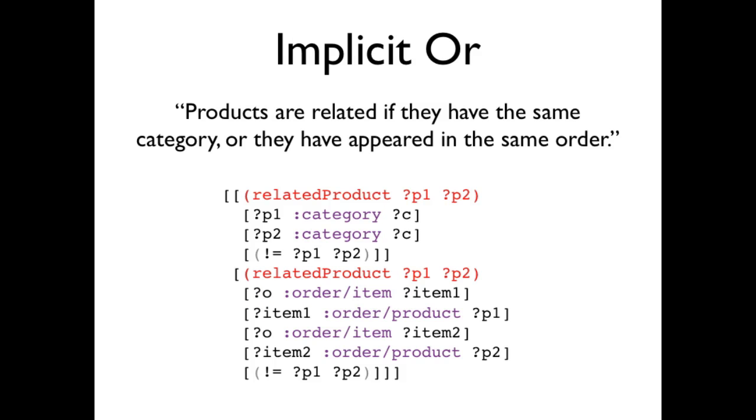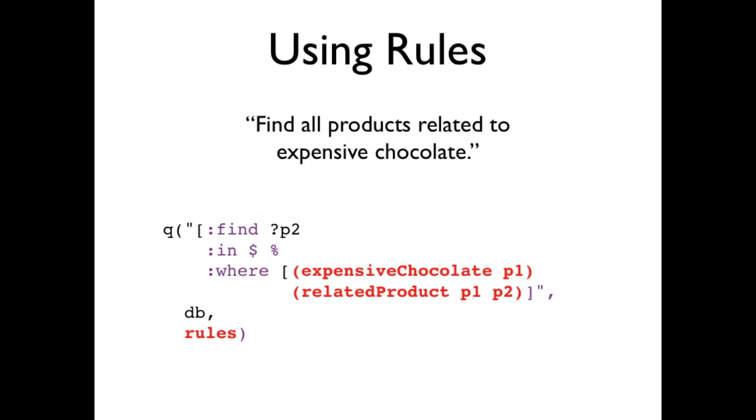If more than one rule has the same name, then they combine via implicit OR. Here products are related if they have the same category, or if they have ever appeared in the same order. Rules are passed to Q as simply another input. Where dollar sign is the placeholder for a data source, percent is the placeholder for a collection of rules. Here two rules are joined to find all products related to expensive chocolate in a database. Rules are analogous to database views. But where database views have to be installed in a database server, Datomic rules can be created locally in your application, on the fly, at any time. That's agility in a database.